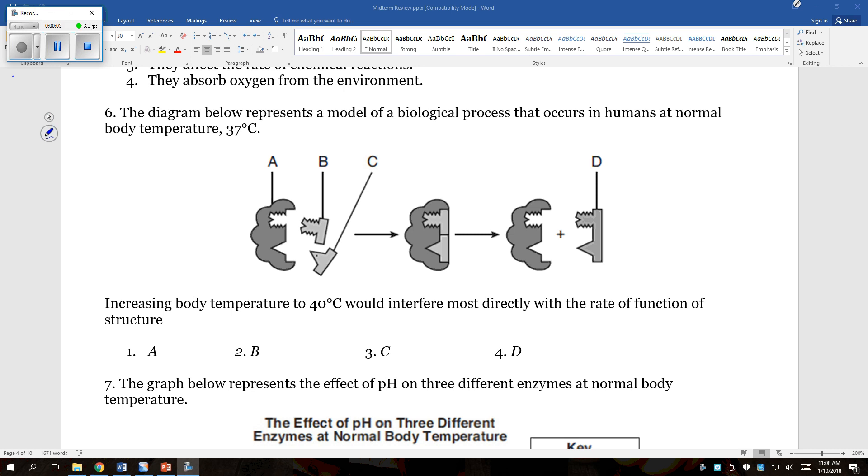Question number six says, the diagram below represents a model of a biological process that occurs in humans at normal body temperature, 37 degrees Celsius. The question says, increasing body temperature to 40 degrees Celsius...